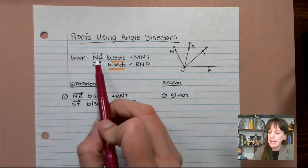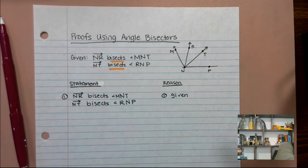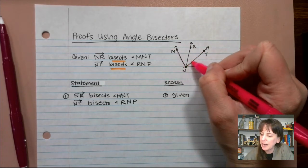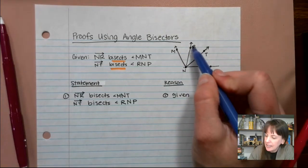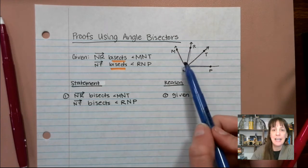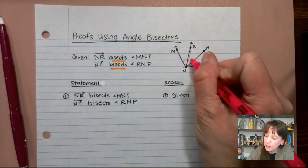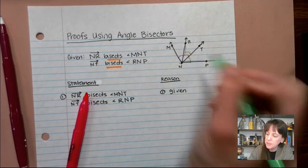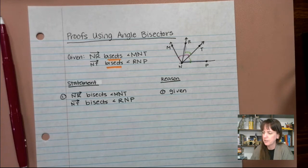So let's talk about this. NR bisects angle MNT. M-N-T. So that means M-R, N-R. I can't with my pronunciation today. All right. So this angle right here is bisected by NR, and then this angle right here is bisected by N-T, which means that this guy right here is congruent to this guy. And then we'll use a different color so you can see it a little better. This guy is congruent to this guy. If you haven't already, it's a good idea to get colored pencils, highlighters, that kind of thing for your geometry class.